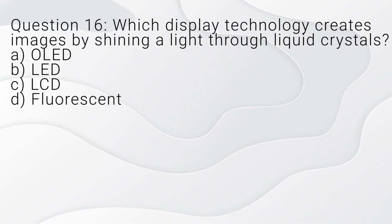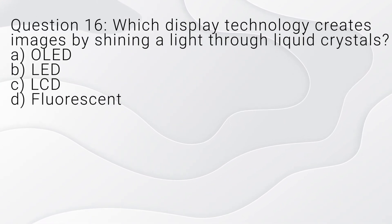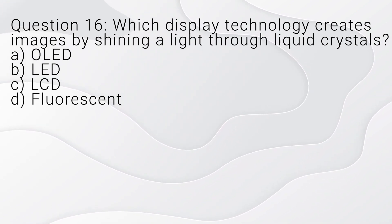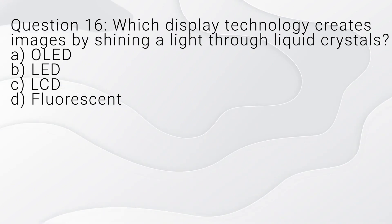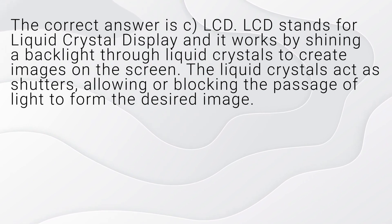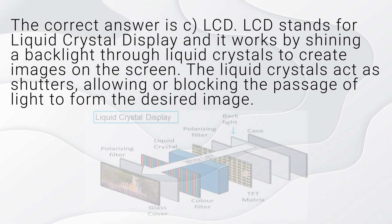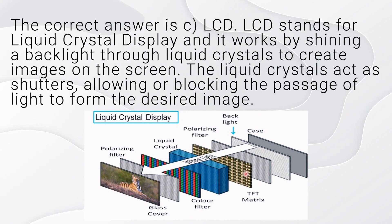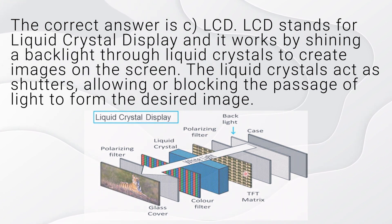Question 16. Which display technology creates images by shining a light through liquid crystals? A. OLED. B. LED. C. LCD. D. Fluorescent. The correct answer is C, LCD. LCD stands for liquid crystal display and it works by shining a backlight through liquid crystals to create images on the screen. The liquid crystals act as shutters, allowing or blocking the passage of light to form the desired image.